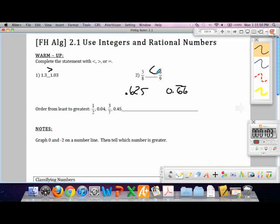Same game, order from least to greatest. Your order should have been 0.04, 3 sevenths, 0.45, and 1 half. Would have been your order.